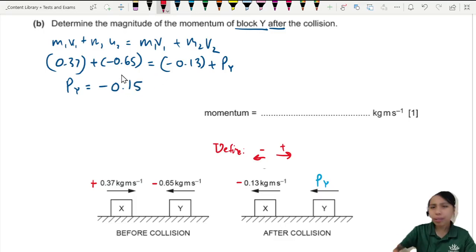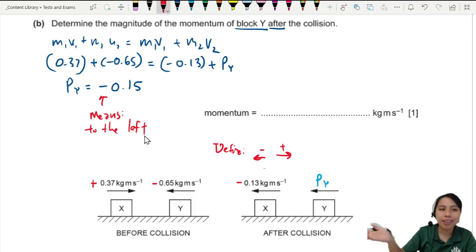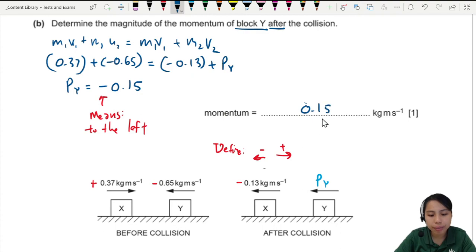And your P_Y, you would get a negative value in this system: negative 0.15. Don't panic if you see a negative. This negative just tells me it's to the left because I define it to be so. So it's to the left. Okay, so we can just write 0.15. It's okay if you don't have the negative, depends on your system. Okay, one mark here.